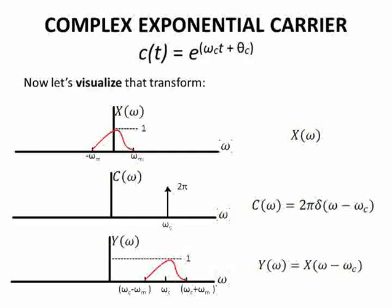The second plot shows C(ω), the Fourier transform of the carrier function c(t). C(ω) = 2π·δ(ω - ω_c). Notice this is a shifted delta function centered at ω_c with amplitude 2π.